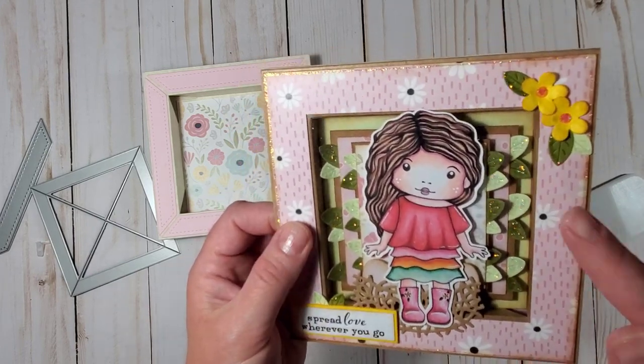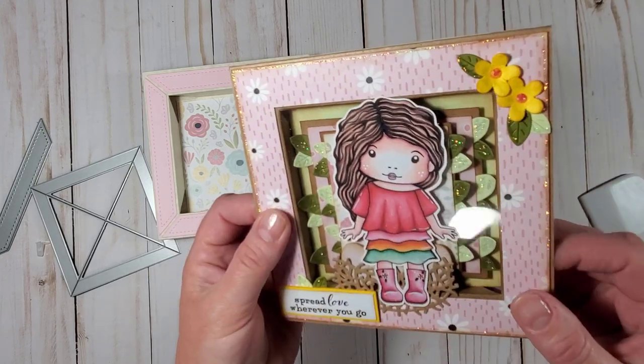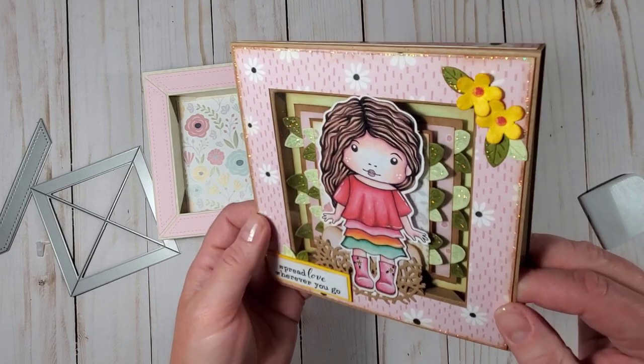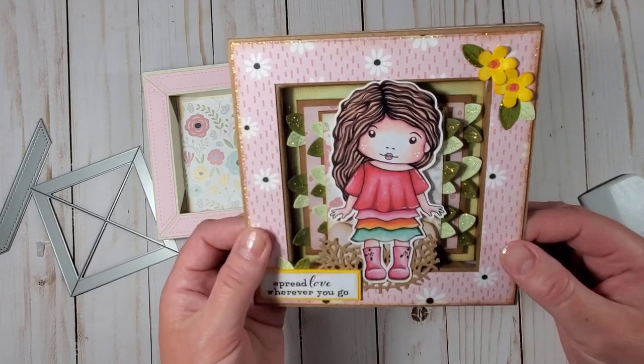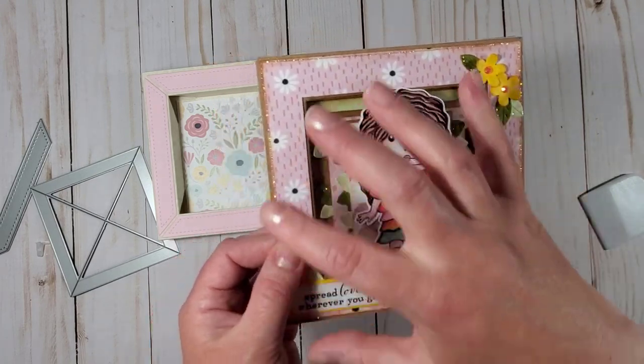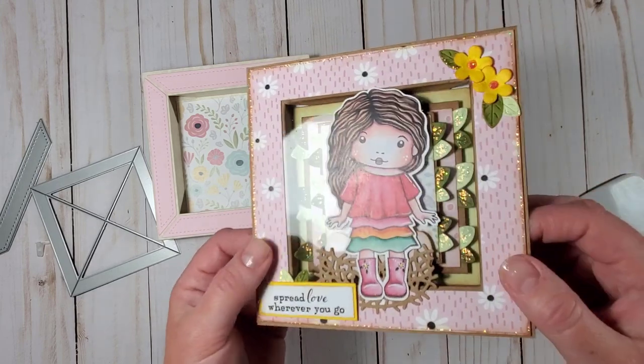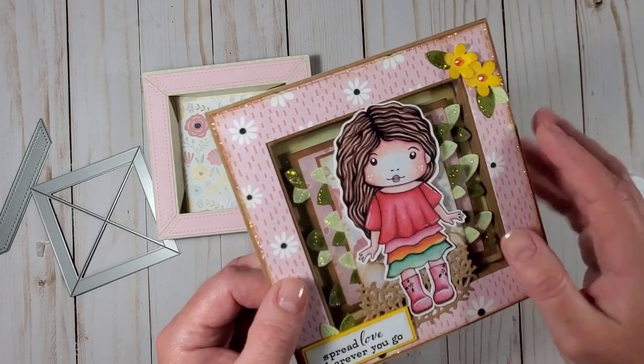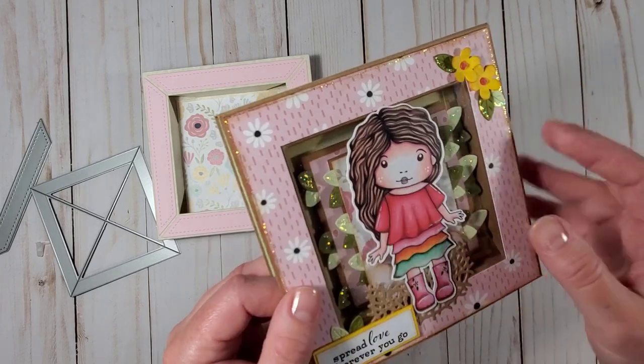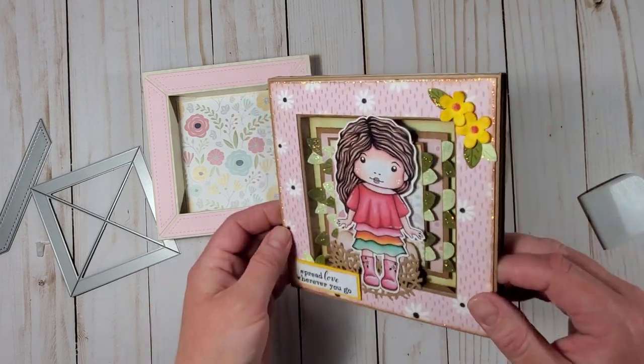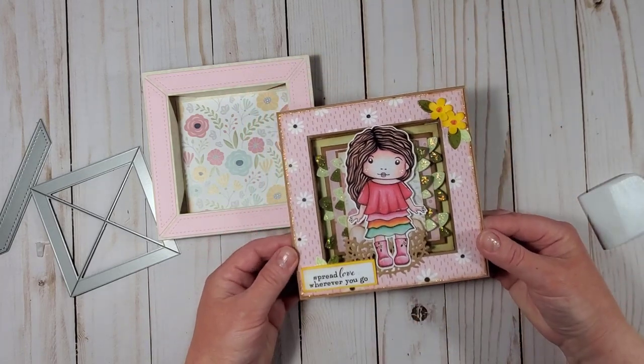And I used some foam squares, dimensional foam squares, to create that additional interest and depth inside the shadow box and I used a piece of acetate to kind of close it and I really like how it turned out.